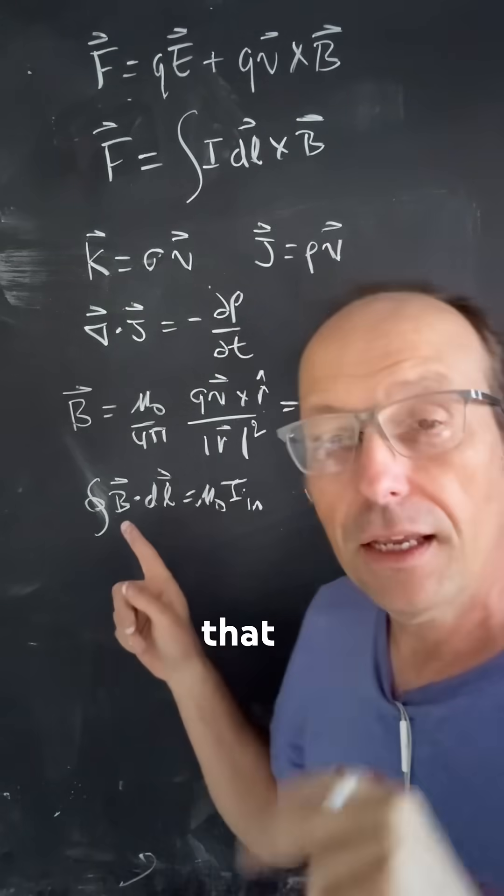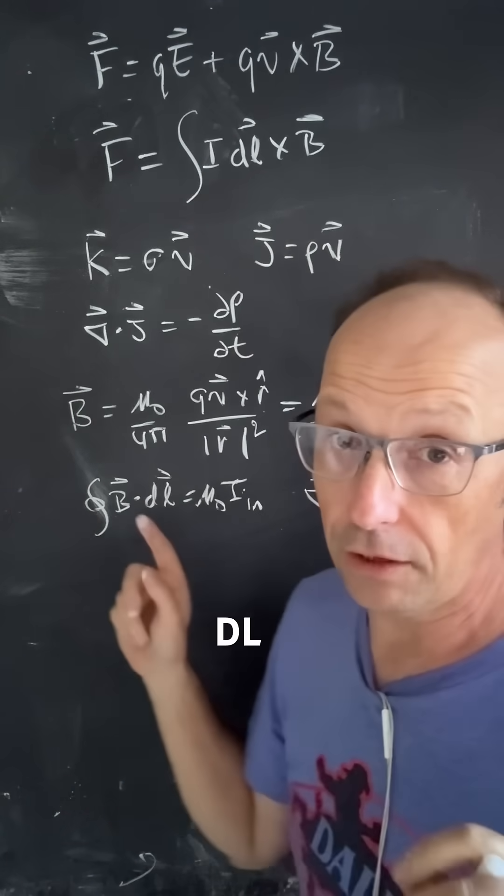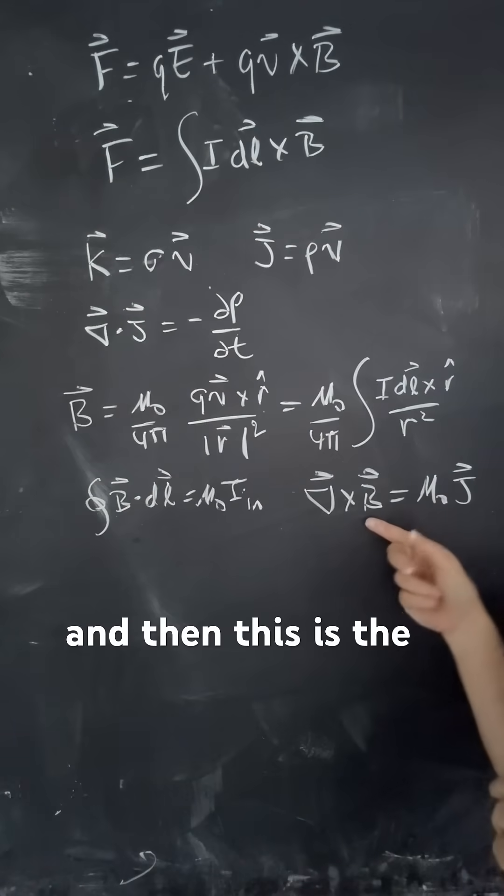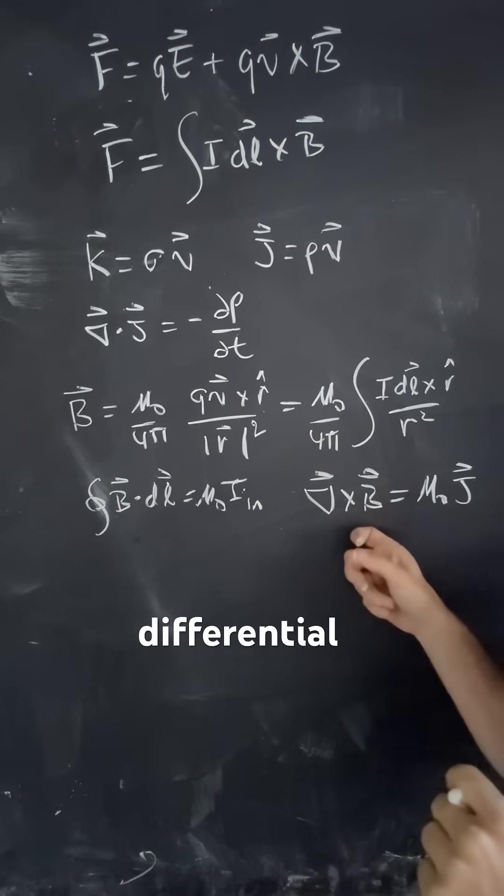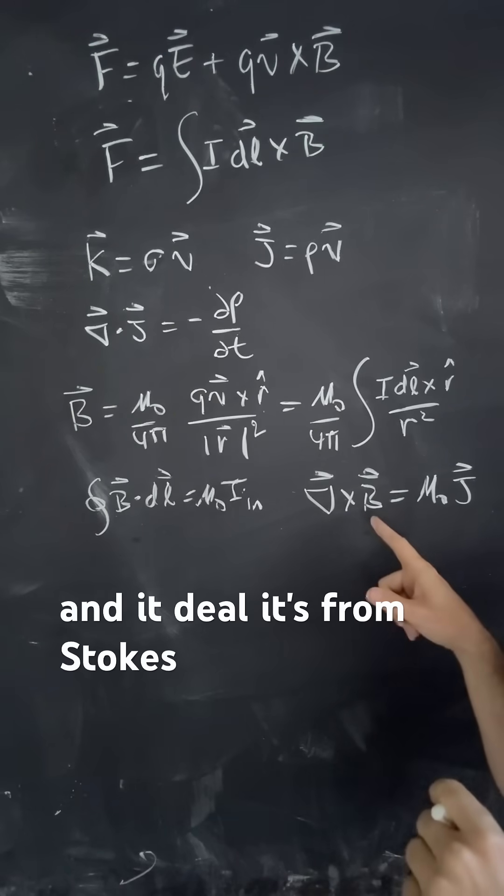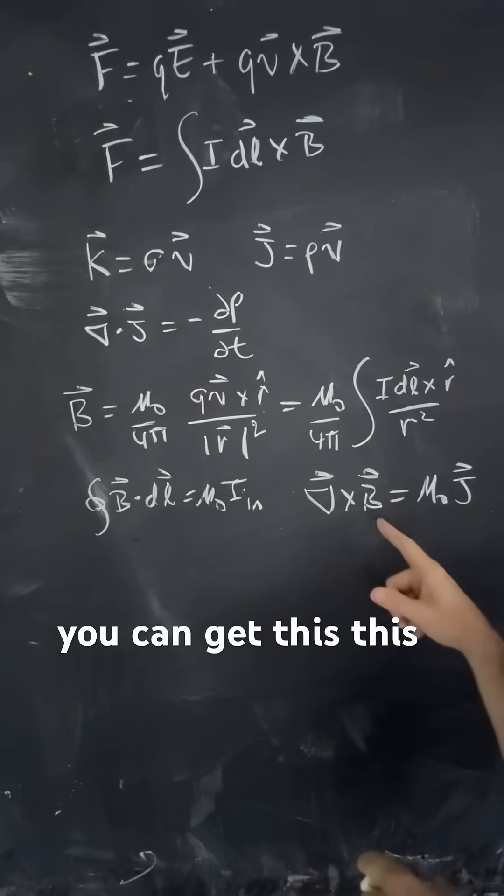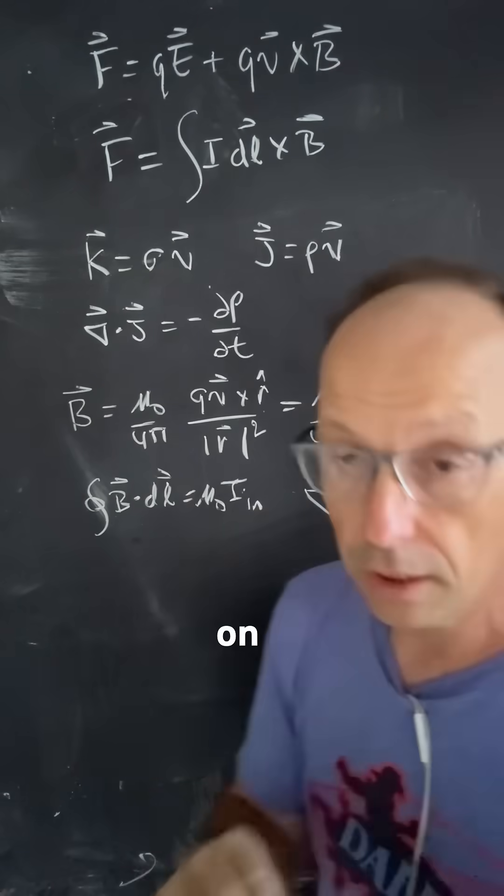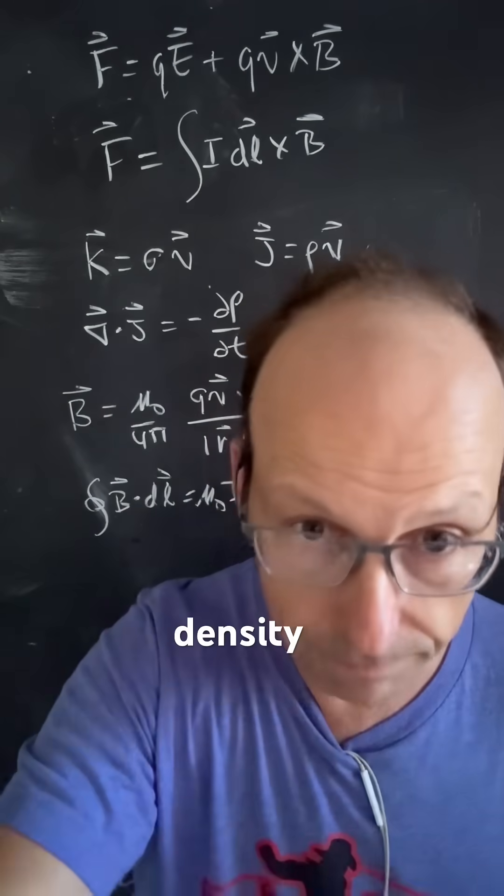Notice that in the previous case, we said the integral of E dot DL over a closed path of zero, which isn't always true, but we'll get back to that. And then this is the differential version of Ampere's law, and it's from Stokes' theorem. You can get this. This just tells you how the curl of the magnetic field depends on the current density. The end.